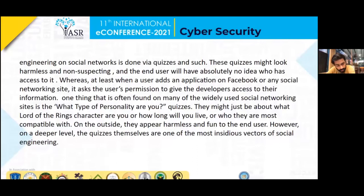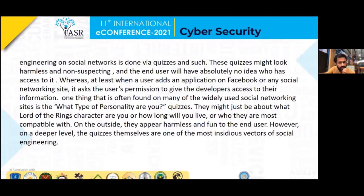Nowadays, social engineering is executed via quizzes and such — online quizzes. These quizzes might look harmless and non-suspecting, and the end user will have absolutely no idea as to who has access to the data. For example, the most common type of quiz we see now is called 'What type of personality are you?' They might be about what Lord of the Rings character you are, how long you will live, or who you are most compatible with. On the outside they appear harmless and fun, but on a deeper level these quizzes are one of the most insidious vectors of social engineering.